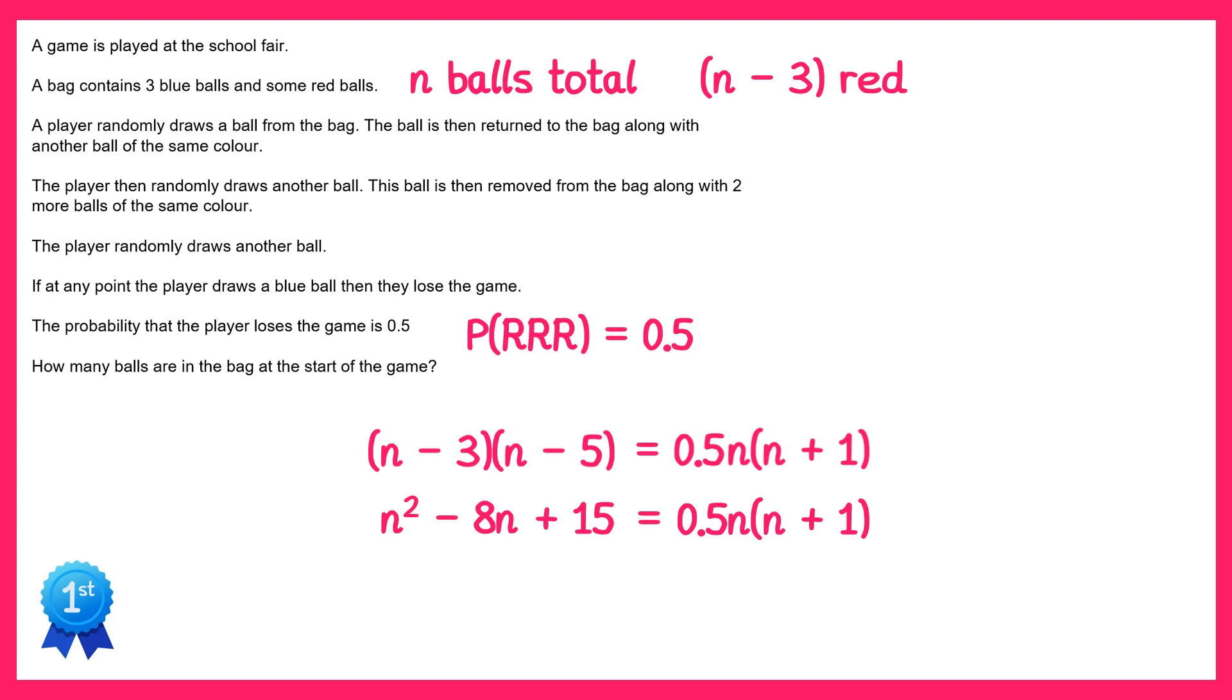Now to deal with this 0.5 on the right hand side I'm going to multiply both sides of the equation by 2. So if I multiply the left side by 2 instead of n squared I get 2n squared, instead of negative 8n it's negative 16n, and instead of plus 15 it's plus 30. On the right hand side if I multiply by 2 that will cancel out with the 0.5, so we're just left with n n plus 1. Which we could also expand as n times n which is n squared, and n times 1 which is n.